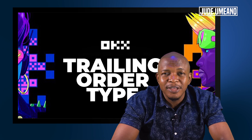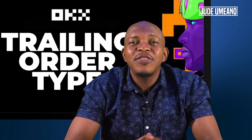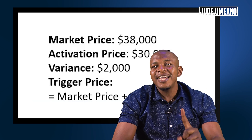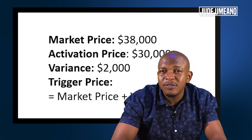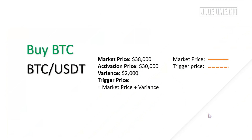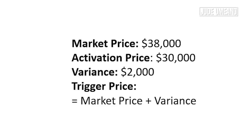Example 1: let's say I want to buy Bitcoin and the current market price is $38,000. From my analysis, Bitcoin is going to fall to $30,000 but might fall further. So I will use the trailing stop order such that my order will not be filled at $30,000 but at a lower price if Bitcoin falls below that. I will set my Activation price at $30,000 and my variance at $2,000. Thus, my trigger price is $2,000 above the market price. We are in the Bitcoin USDT market: market price $38,000, activation price $30,000, variance $2,000, and the trigger price is the market price plus variance.